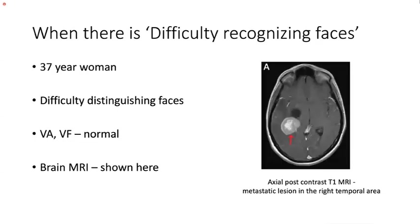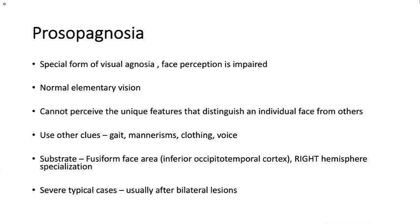Prosopagnosia: a young woman had difficulty distinguishing faces despite normal visual acuity and visual fields; brain MRI showed a metastatic lesion in the right temporal area. This is a special form of visual agnosia where perception of unique features distinguishing one face from others is affected. The person uses other cues such as gait, mannerisms, clothing, and voice to identify people. The substrate is the fusiform face area in the inferior occipitotemporal cortex, with right hemisphere specialization, though severe typical cases occur after bilateral lesions.